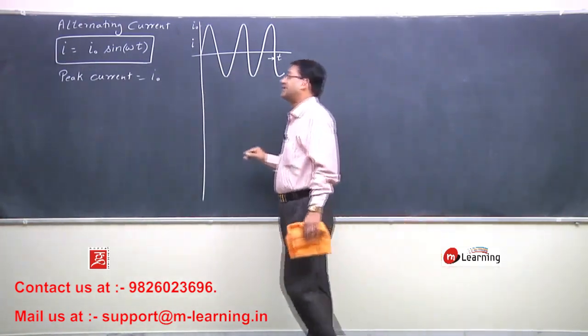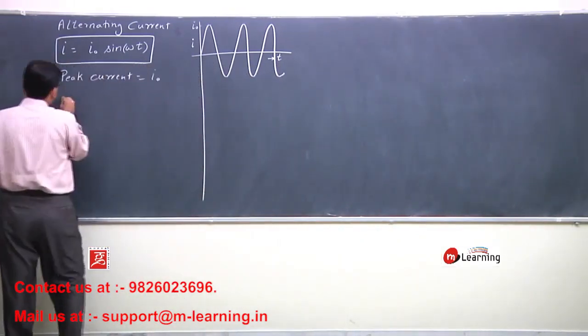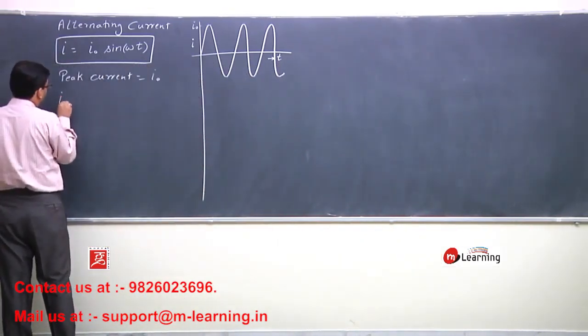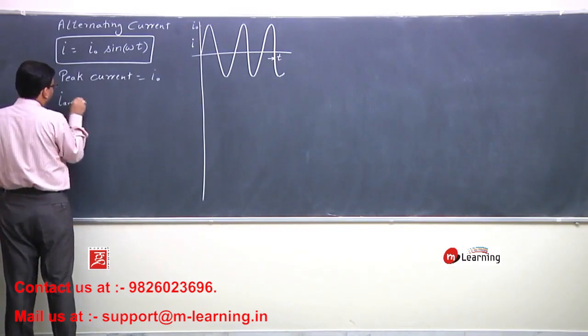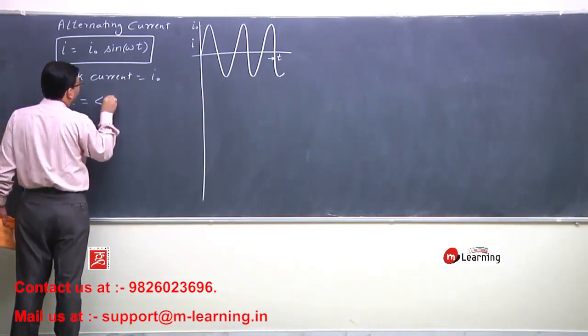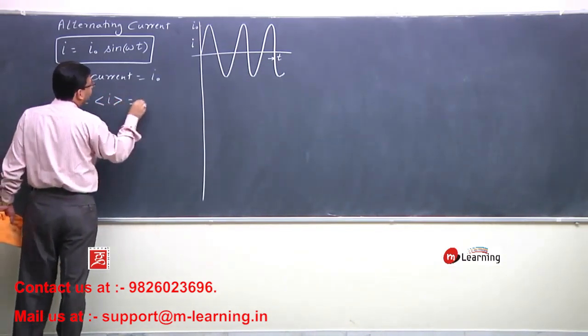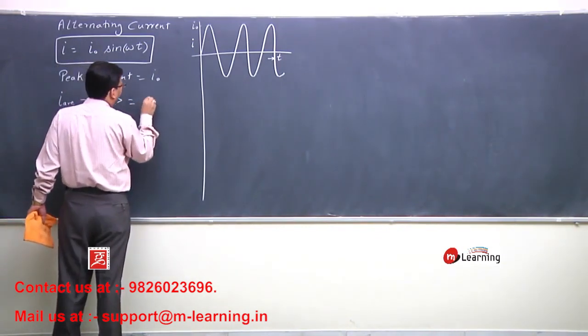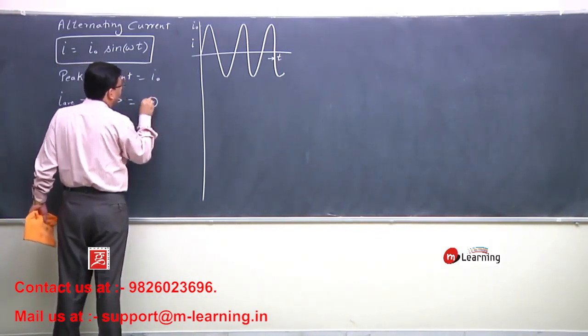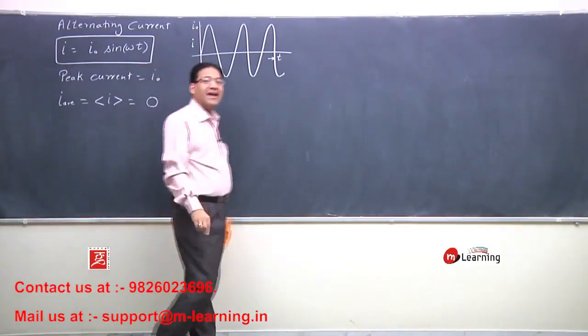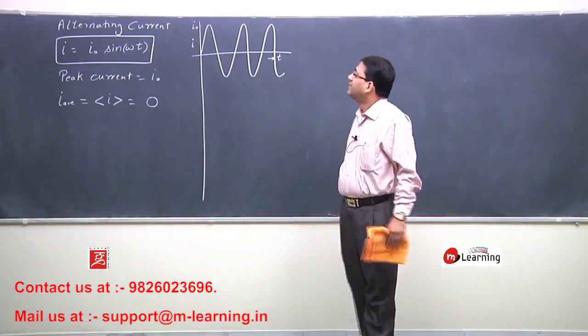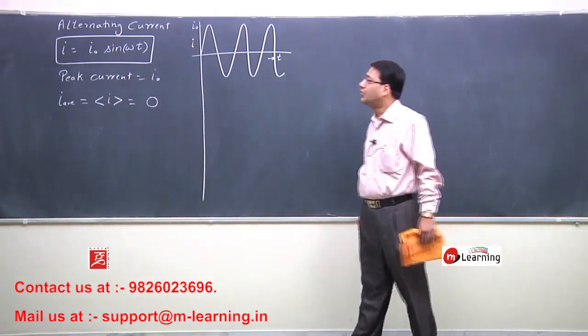Average current is I average, which is denoted like this. And I prove that this I average current is 0.